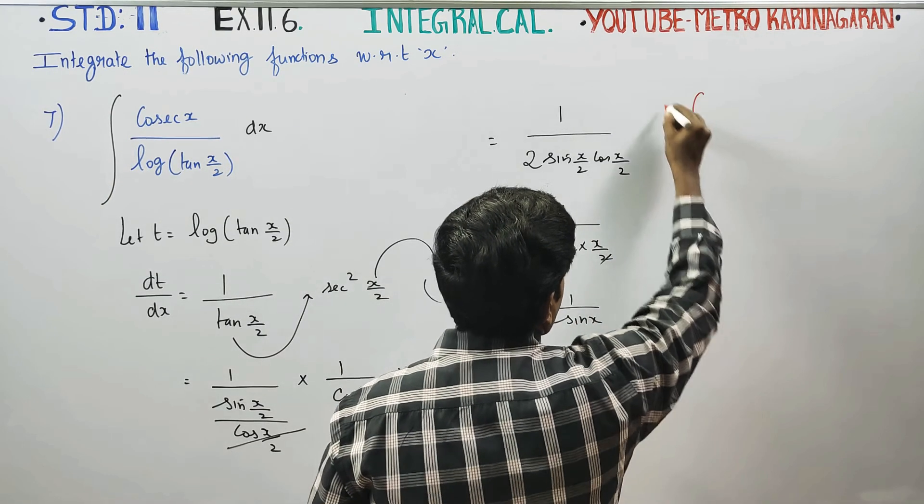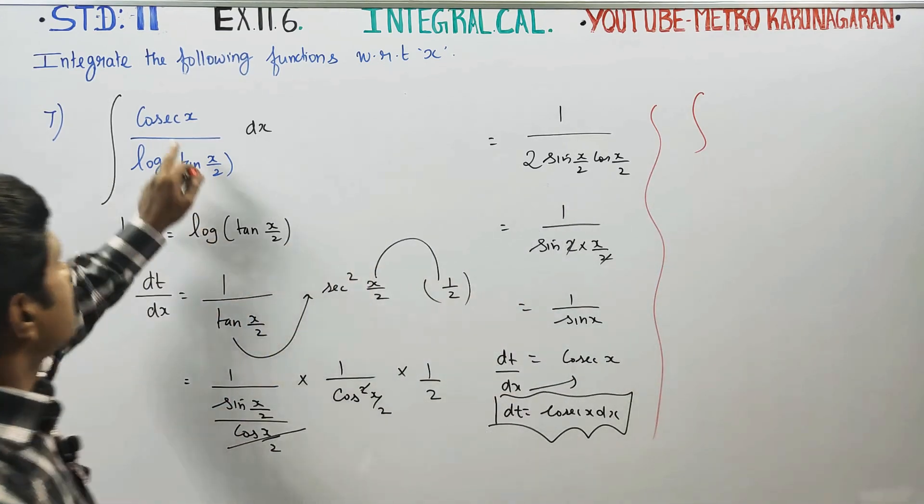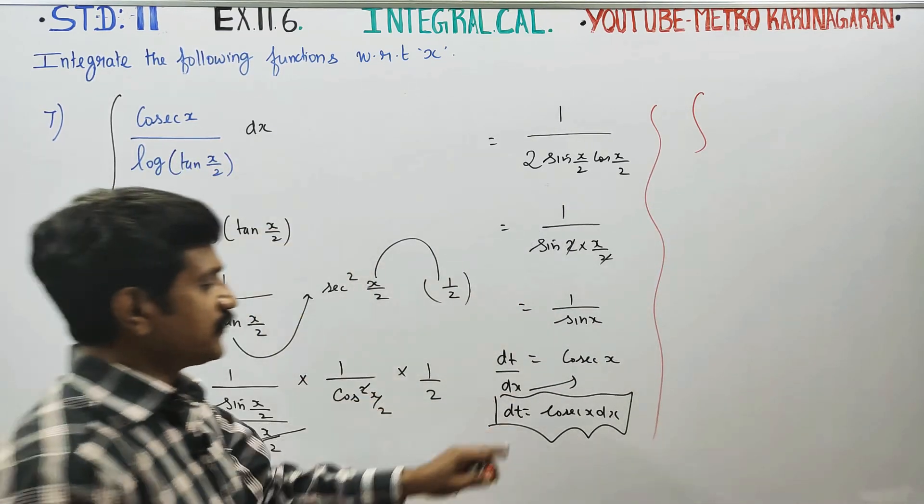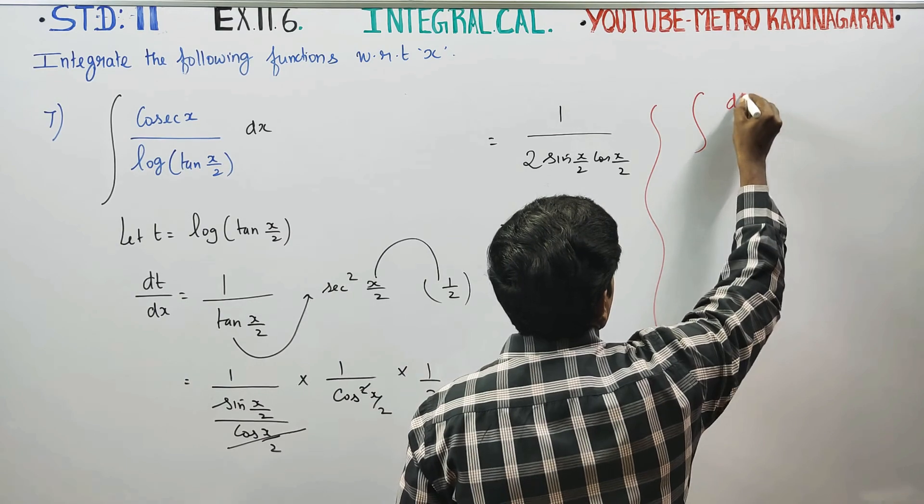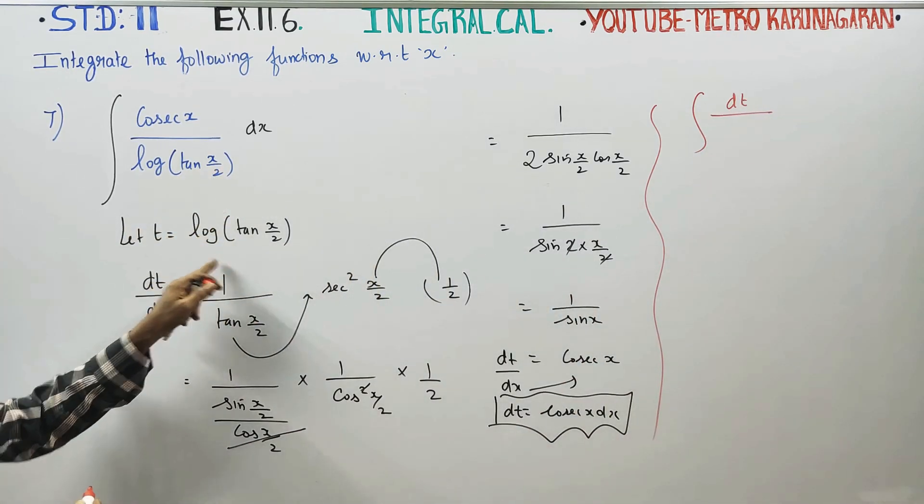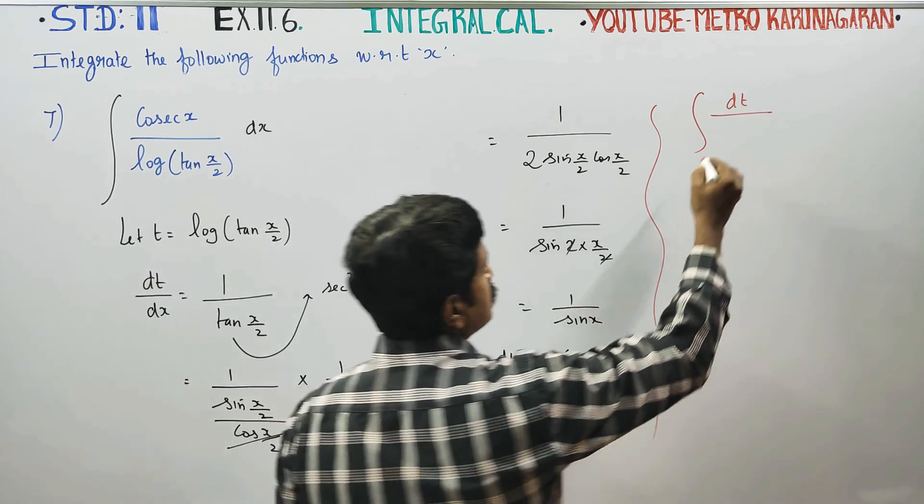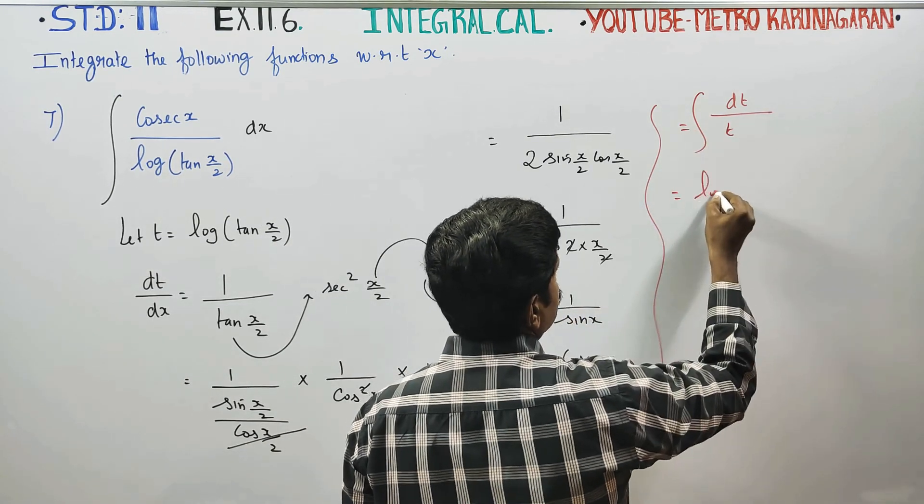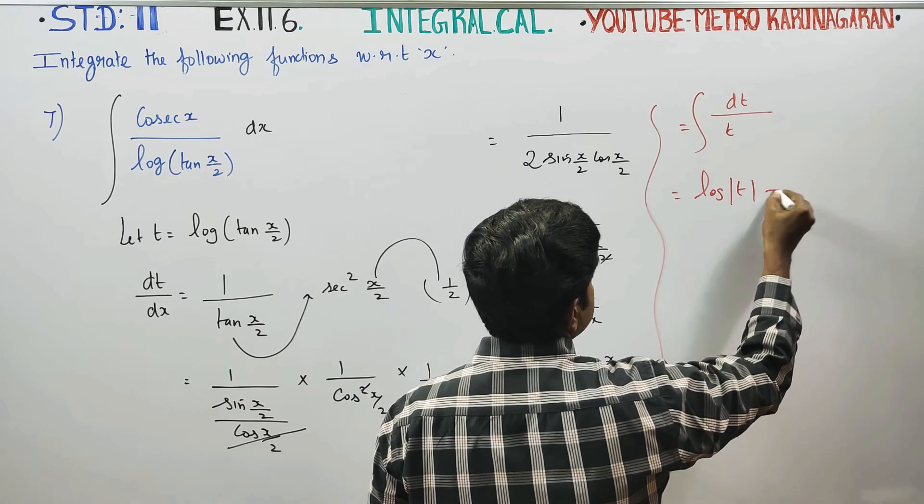Integration of: instead of cosecant x dx, you can comfortably write dt, divided by, instead of log tan x by 2, you can write t. The formula for 1 by t: integration of 1 by t is logarithm of t, logarithm of t plus c.